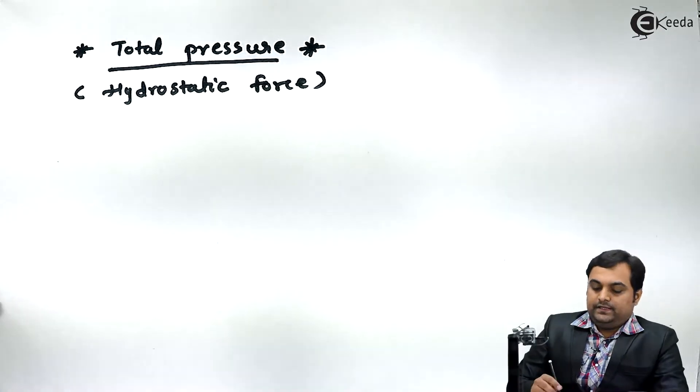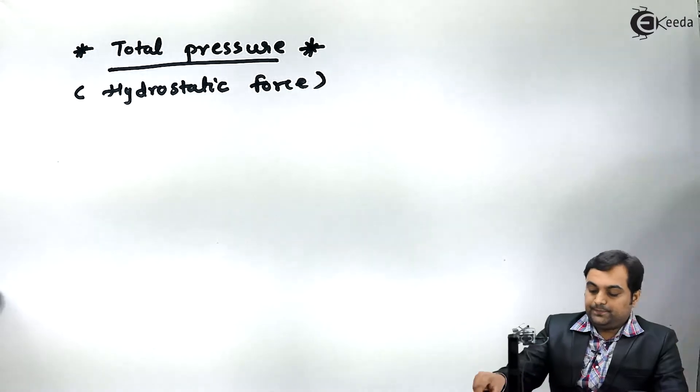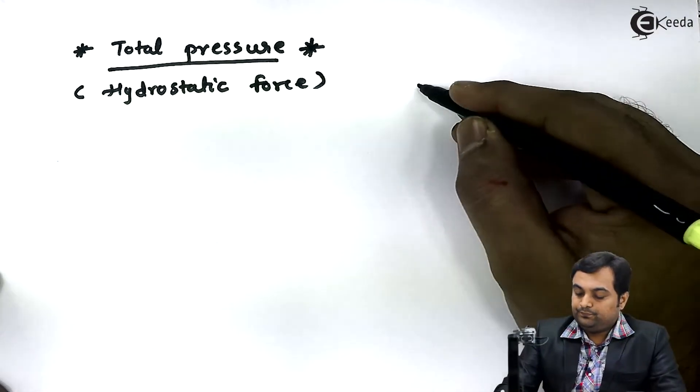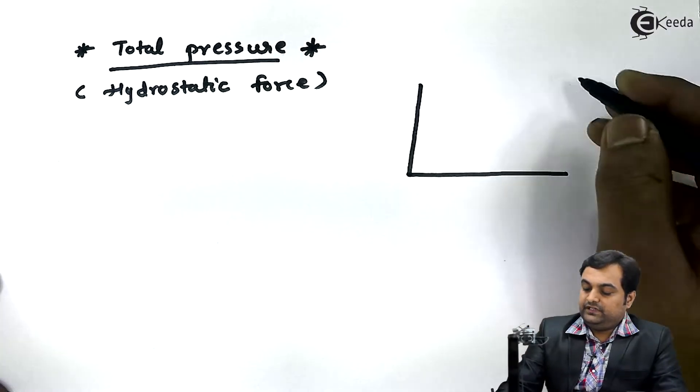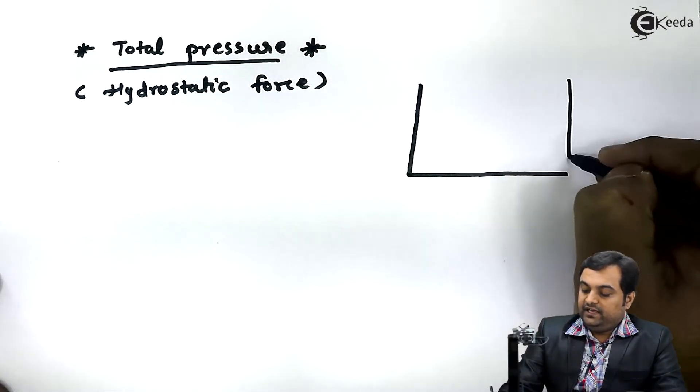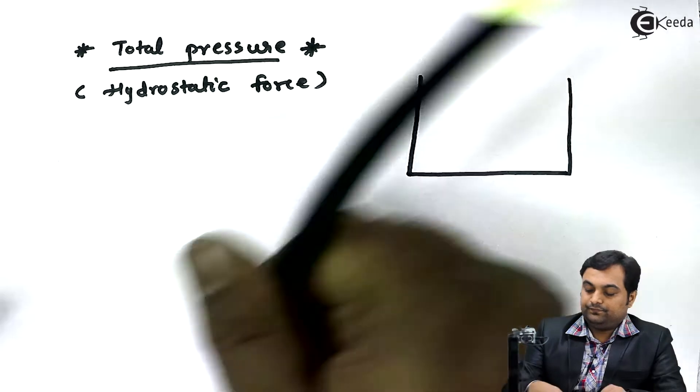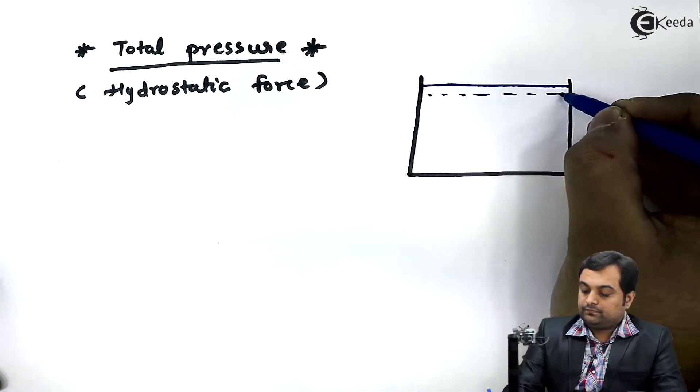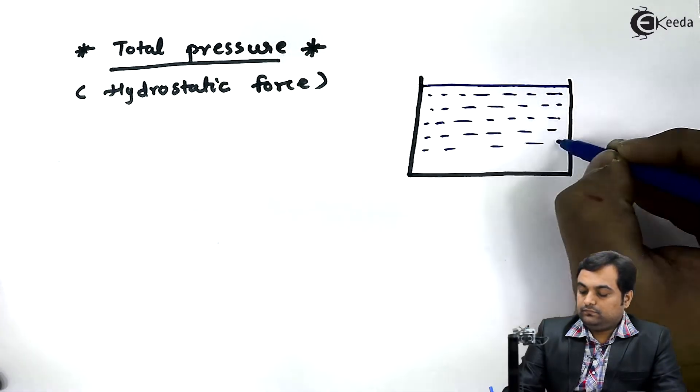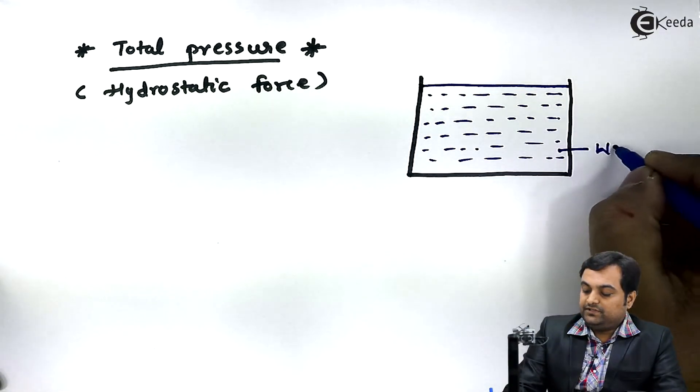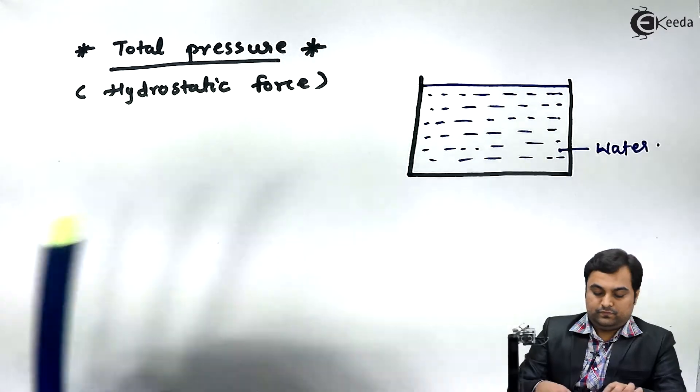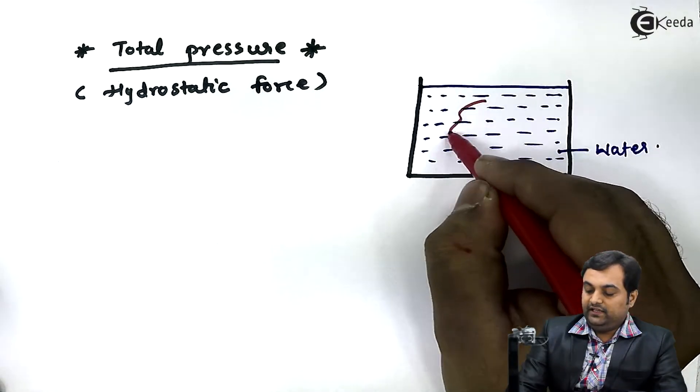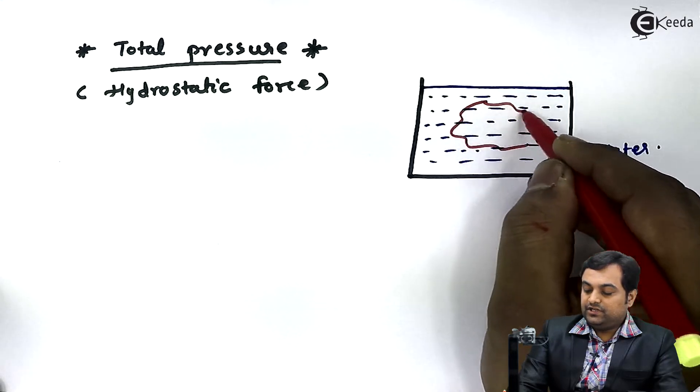Now for total pressure, the assumption is that we have a tank which is filled with water. Water is there inside the tank and next we have a body of any given shape. The shape is arbitrary.